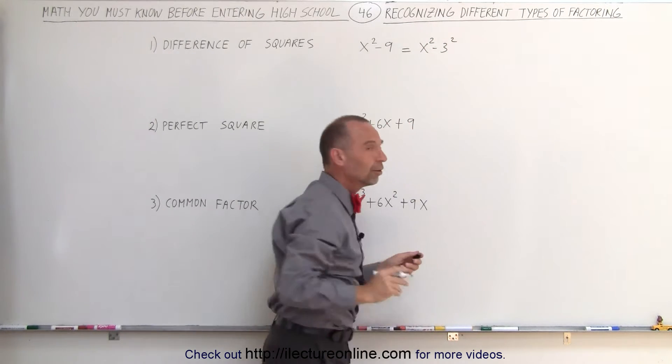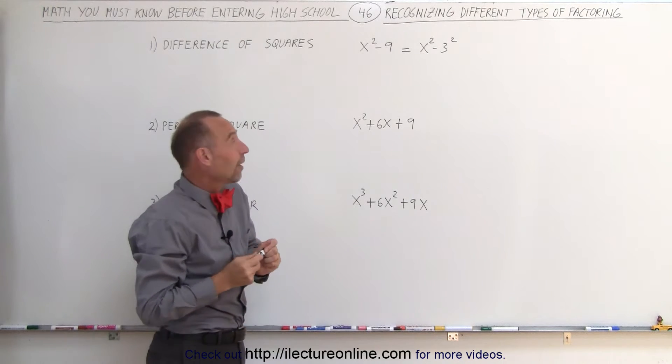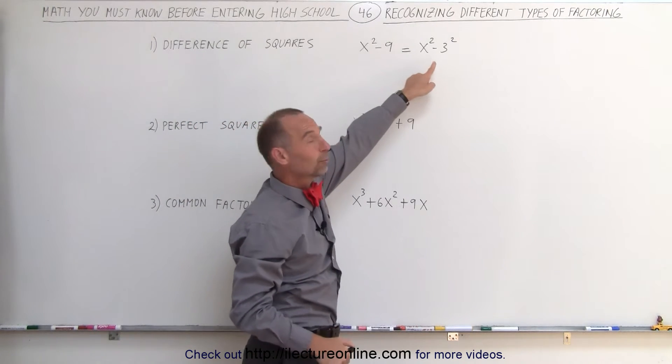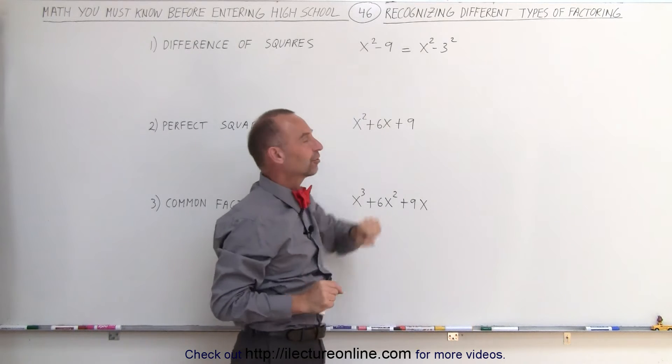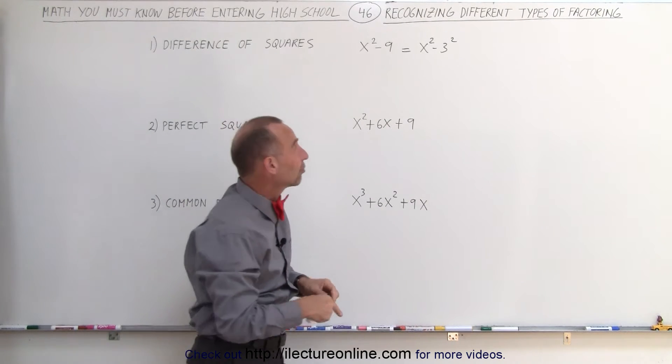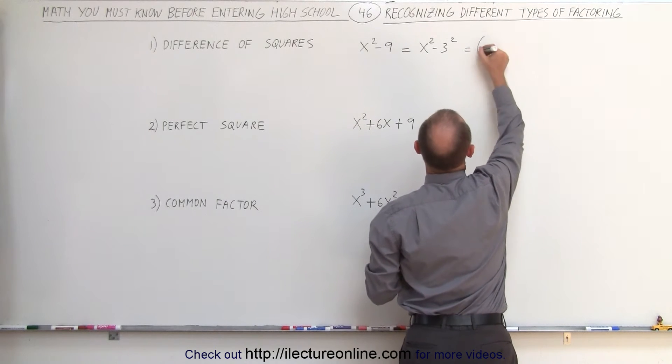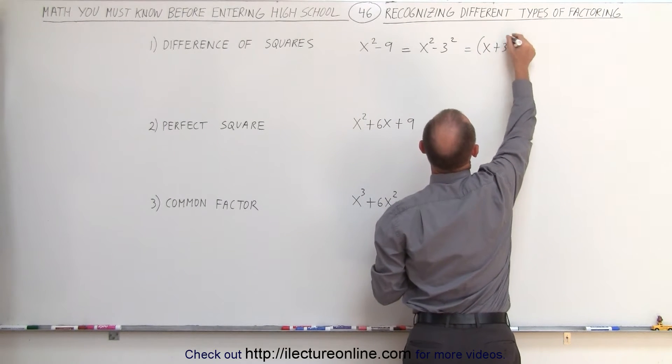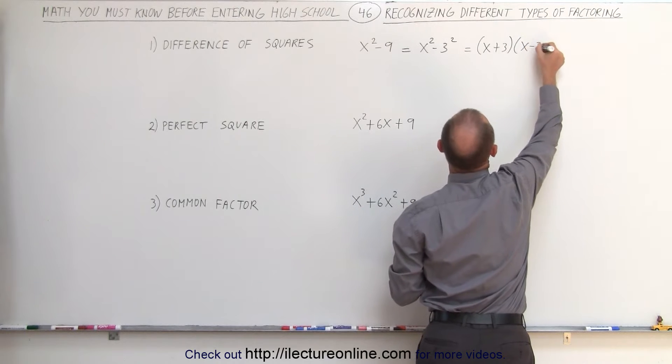So we can write this binomial as x squared minus 3 squared. Now we have written the difference of squares. So first of all, it may not look like it, but on further inspection, we may be able to write it as the difference of squares. Next, when you factor the difference of squares, the answer is very easy. This is equal to x plus 3 times x minus 3.